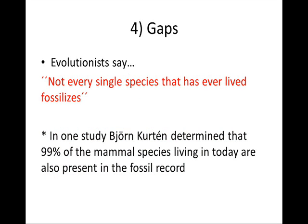Number four: gaps in the fossil record. Evolutionists usually say the reply about gaps is that not every single species that has ever lived fossilizes. Well, this may be true, but according to a study, John Curtin determined that 99% of the mammal species living today are also present in the fossil record. This means that 99% of the mammals that are living today are also found in the fossil record, so 99% of the mammals that have ever existed should also be found in the fossil record.